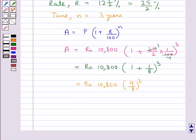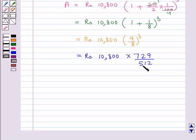Now this further is equal to Rs. 10,800 multiplied by 9 cube is 729 upon 8 cube is 512. And now 64, 8 times is 512 and 1350, 8 times is 10,800.